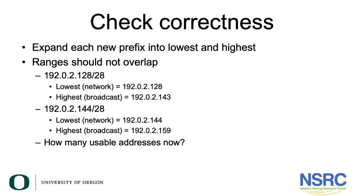So we are now going to check the correctness of what we did. We're going to expand each new prefix into lowest and highest addresses — the ranges should not overlap. The first prefix is 192.0.2.128/28. Remember we moved one of the host bits to the prefix bits, so it's now a /28. The lowest address, which is the network address, is 192.0.2.128. The highest IP address is 192.0.2.143, which is the broadcast address. The second prefix starts off with 192.0.2.144, which is also a /28. The lowest address is 192.0.2.144 and the highest address, which is the broadcast address, is 192.0.2.159.